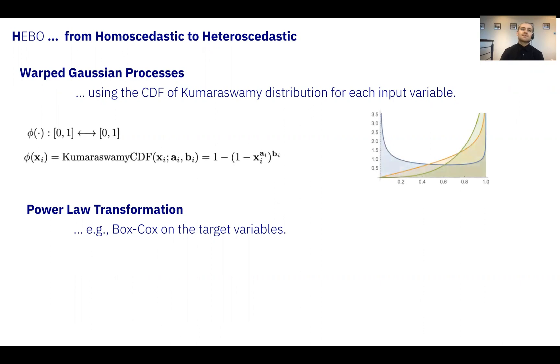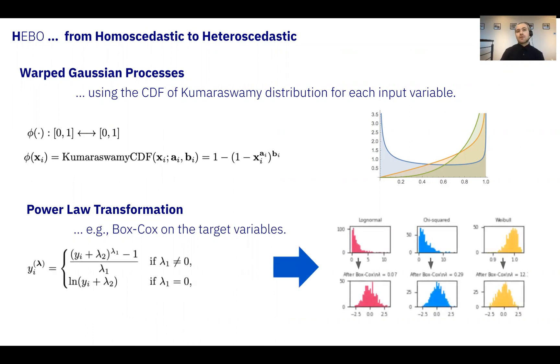We use a warped Gaussian process on the input. Specifically, we use the CDF of the Kumaraswamy distribution, a bijective transformation that remains between 0 and 1 and importantly only introduces two additional parameters, A and B, per input variable, as shown in the equation in the top left. Additionally, we apply a power law transformation on the output variables, as shown in the equation at the bottom left. This transformation reshapes the target data to better resemble a Gaussian distribution, as shown in the plots in the bottom right.